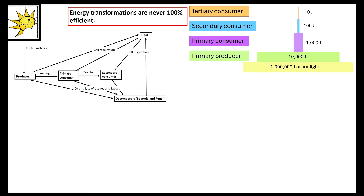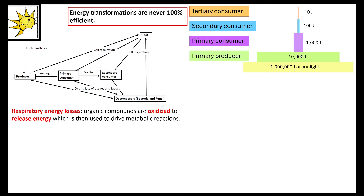Because of this, we rarely get past the tertiary consumer — occasionally a quaternary consumer, but never to a fifth level. Respiratory energy loss occurs because organic compounds are oxidised to release energy used to drive other metabolic processes. Respiration is about making ATP molecules for active transport — moving substances against the concentration gradient — and for muscle contraction, releasing heat energy to the environment.